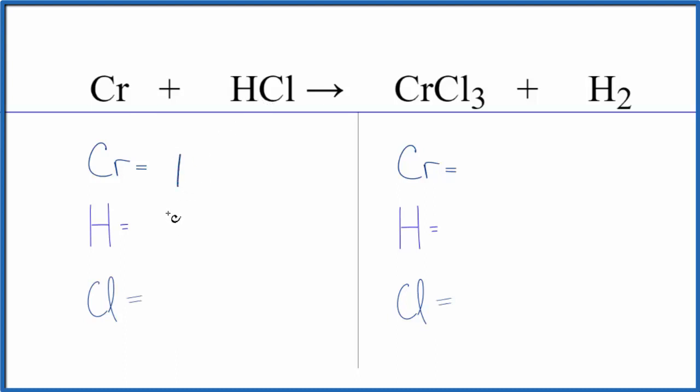One chromium, one hydrogen, and one chlorine. On the product side, we have one chromium, two hydrogens, and three chlorine atoms.